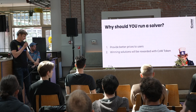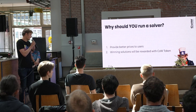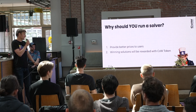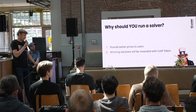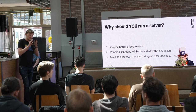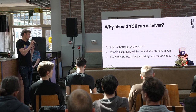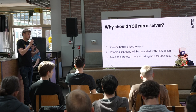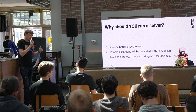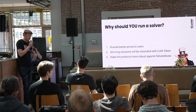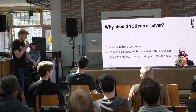The third reason we want a distributed, permissionless, and decentralized solver infrastructure is to make the protocol more robust against failure. Right now 0x and 1inch are performing super well, but what if the 1inch API goes down for whatever reason? We still want a diverse set of solvers running in the background to make sure the protocol is robust and truly permissionless and unstoppable.